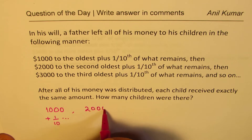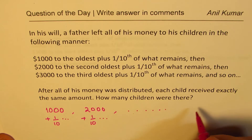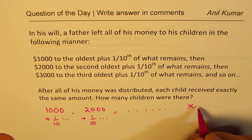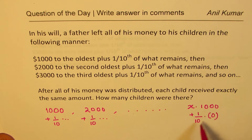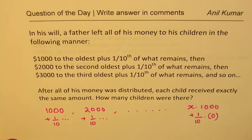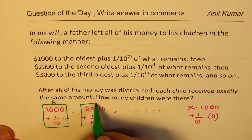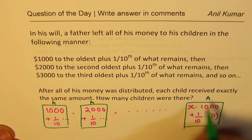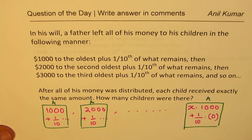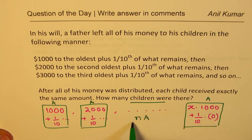The second person gets $2,000 plus one-tenth of some other amount, and this process continues. Ultimately, the last person gets x times $1,000 plus one-tenth of zero amount. Then you get a fixed number. The question also says that all get the same amount. So if this is A, then each amount is also A, and the last amount is also A. So if there are N children, then the total amount is N times A.